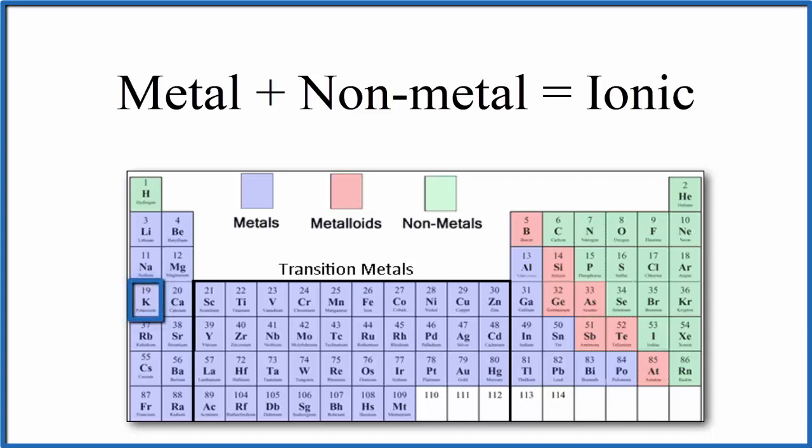Potassium, that's a metal, and then chlorine, that's a non-metal. So metal, non-metal, it's an ionic bond.